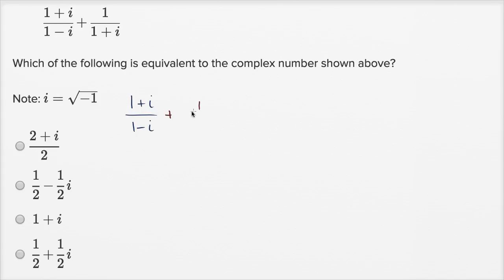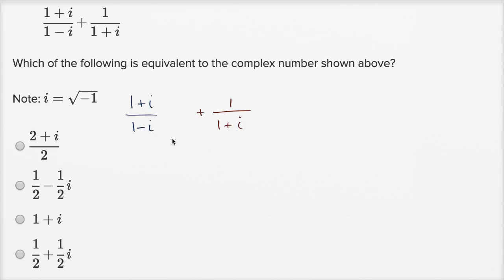And then add that to 1/(1+i). We're able to add two fractions if we have the same denominator. We can achieve the same denominator if we multiply both the numerator and denominator of the first fraction by (1+i), and multiply both the numerator and denominator of the second fraction by (1-i). This is the way you've always added fractions with unlike denominators — we're just finding a least common multiple, which is the product of the denominators.